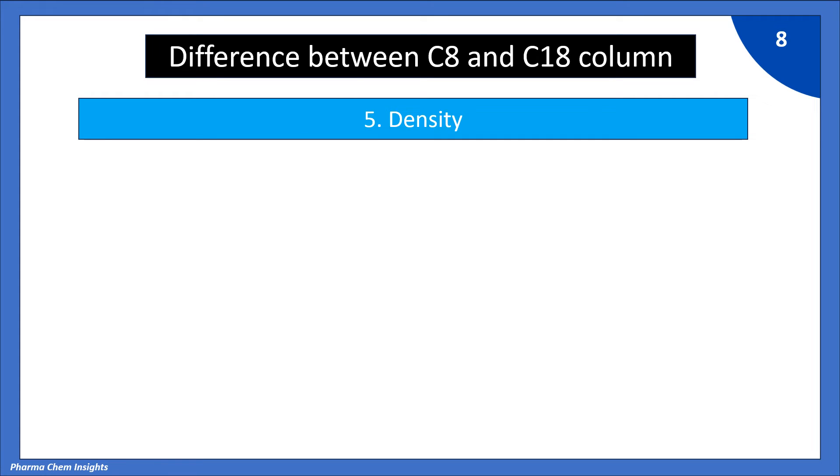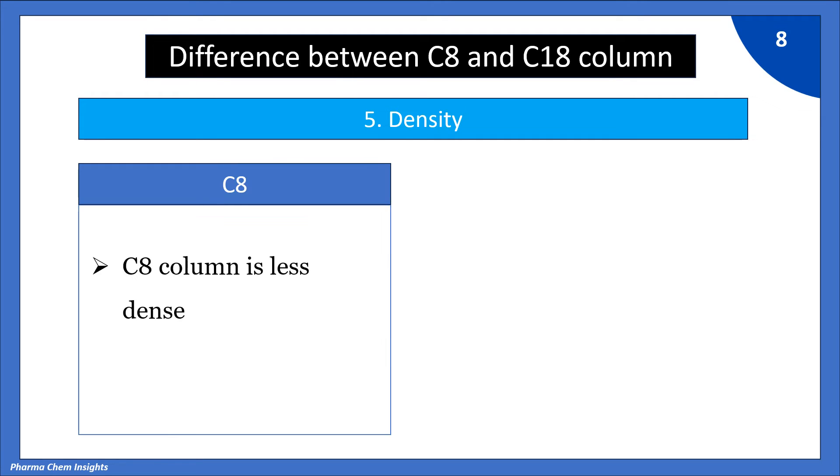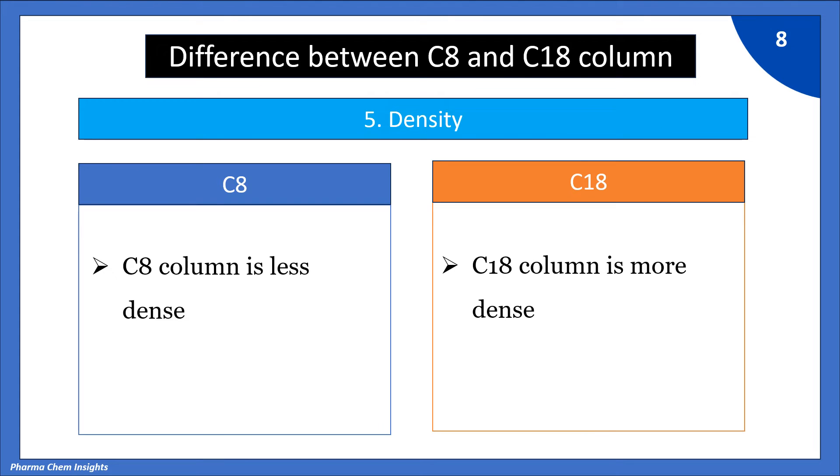5. On the basis of density: C8 column is less dense while C18 column is more dense. C18 column is more dense because of higher loading of carbon.